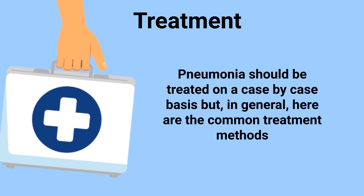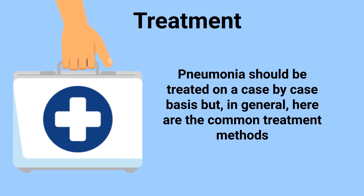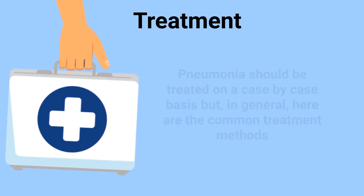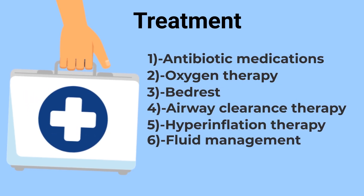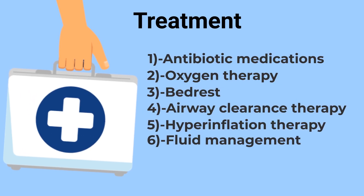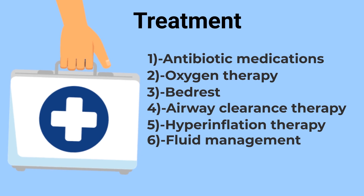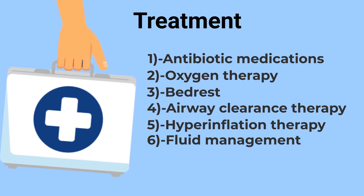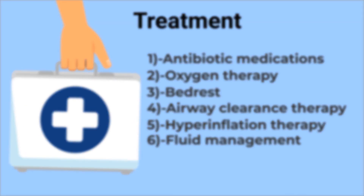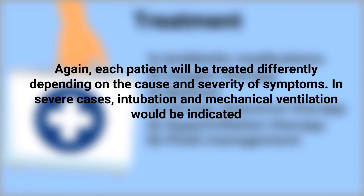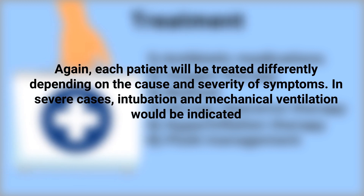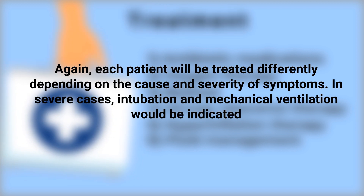Pneumonia should be treated on a case-by-case basis, but in general the common treatment methods include antibiotic medications, oxygen therapy, bed rest, airway clearance therapy, hyperinflation therapy, and fluid management. Each patient will be treated differently depending on the cause and severity of symptoms. In severe cases, intubation and mechanical ventilation would be indicated.